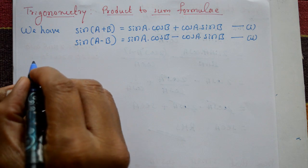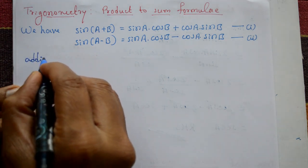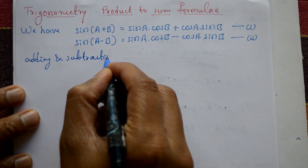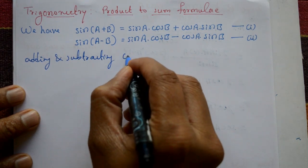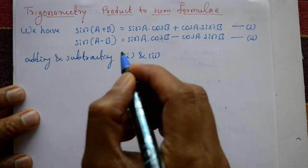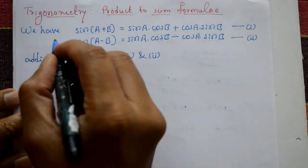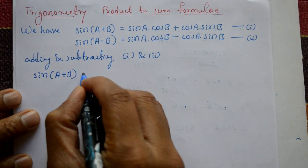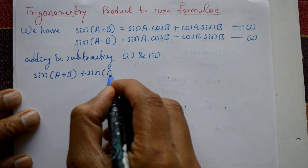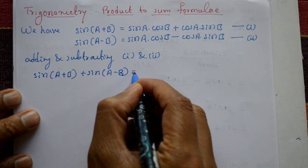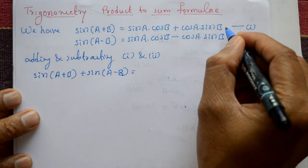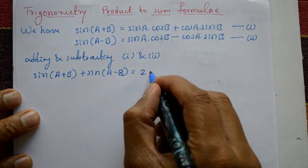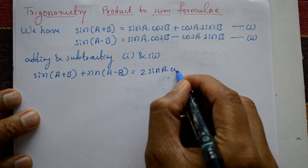Now adding equation number one and two. The left-hand side is sin(a + b) + sin(a − b). On the right-hand side, the minus and plus terms cancel, giving us two times sin a · cos b. This is equation number three.